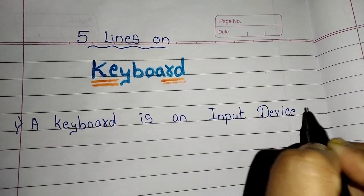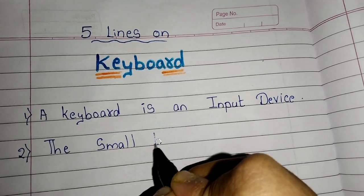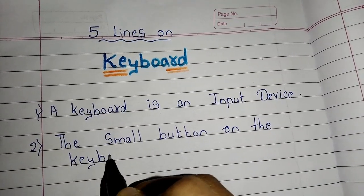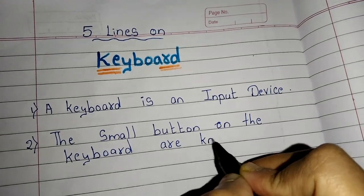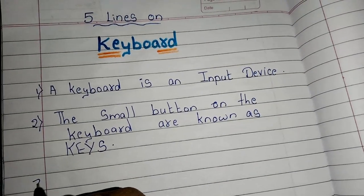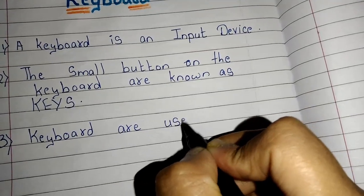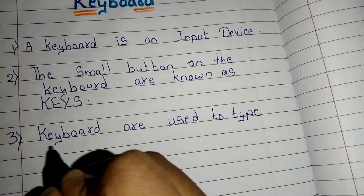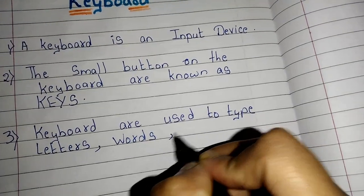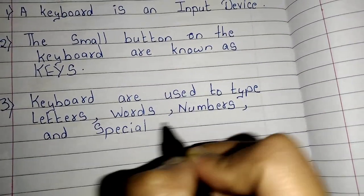A keyboard is an input device. The small buttons on the keyboard are known as keys. These keyboards are used to type letters, words, numbers, and special symbols.